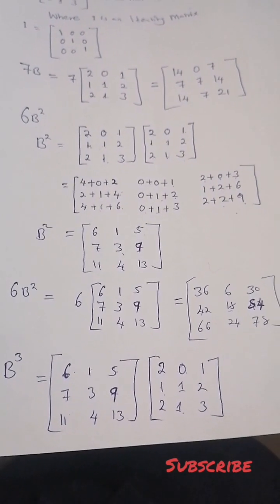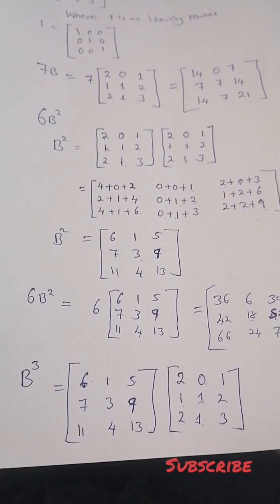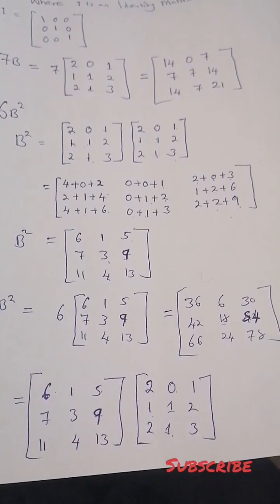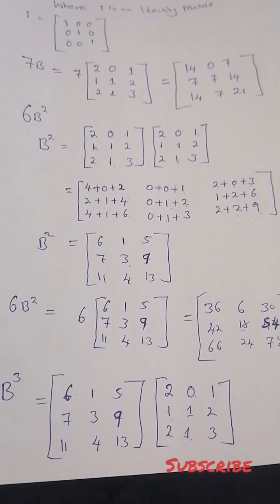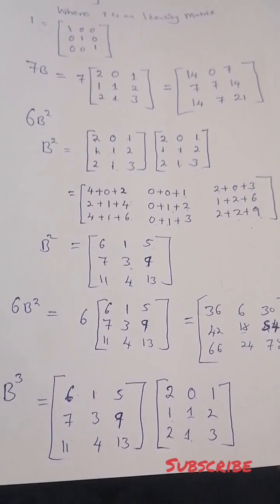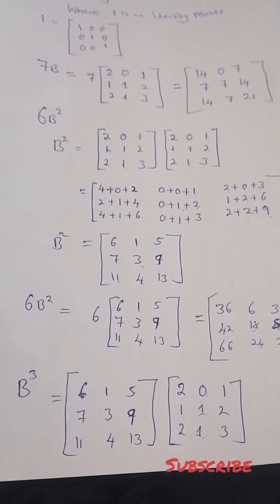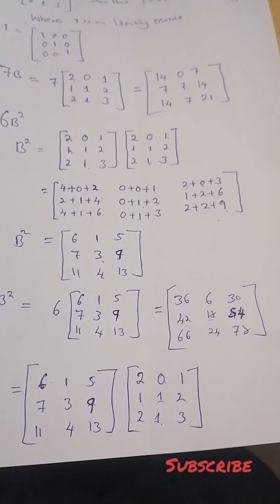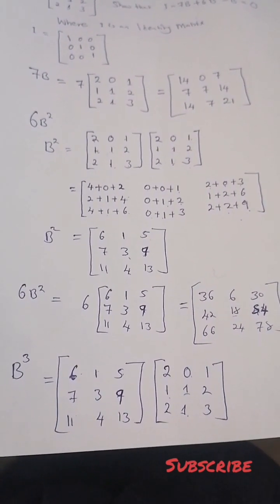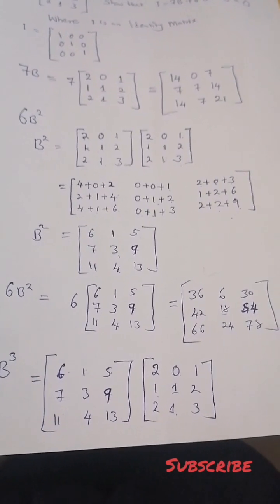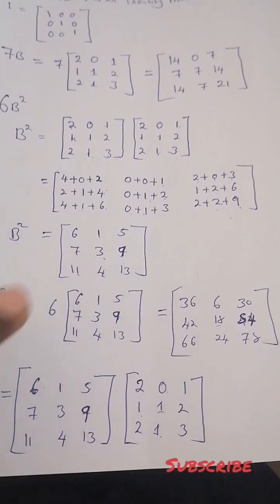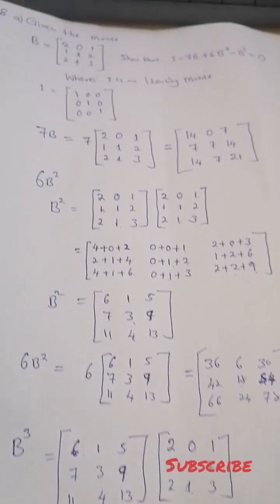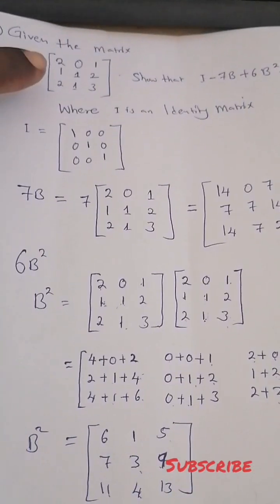Now we solve for B cubed. We multiply matrix B three times, meaning we already have B squared, so we multiply B squared by matrix B. We have B squared which is 6, 1, 5, 7, 3, 9, 11, 4, 13, and we multiply by matrix B.